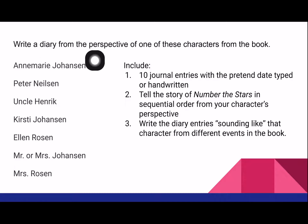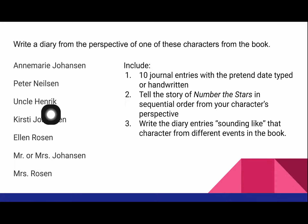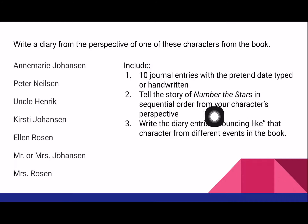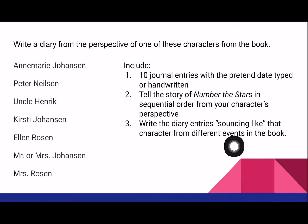Next, you can write a diary from the perspective of one of these characters from the book: Anne-Marie, Peter Nielsen, Uncle Henrik, Kirstie, Ellen, Mr. and Mrs. Johansson, or Mrs. Rosen. Include 10 journal entries with a pretend date, typed or handwritten. Tell the story of Number the Stars in sequential order from your character's perspective, writing each entry sounding like that character from different events in the book.